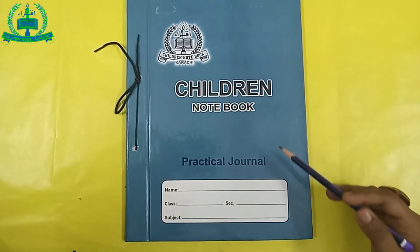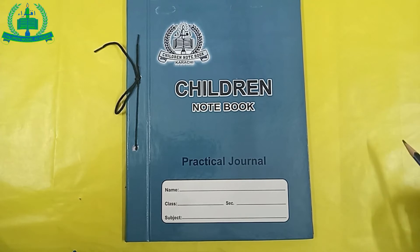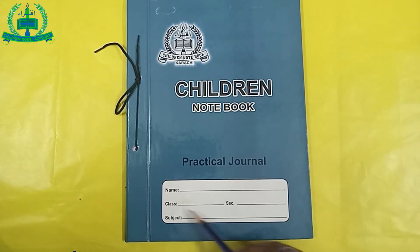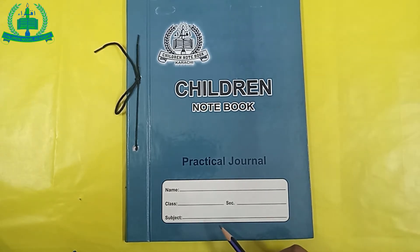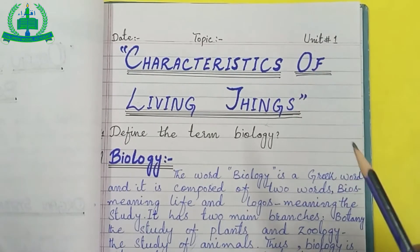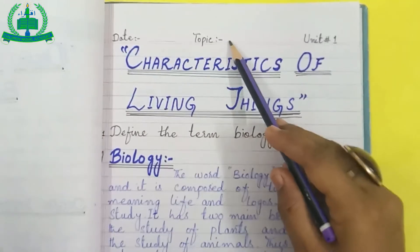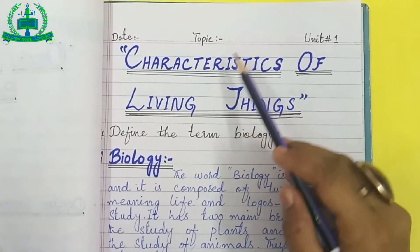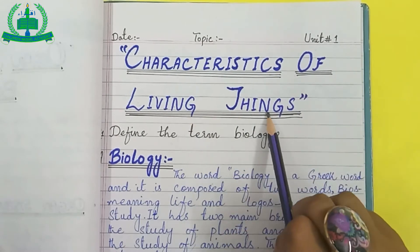This is your science journal. Cover it with a plastic sheet and please mention your name, class, section, subject, and roll number on your journal. Open the first page and write the date and topic: Characteristics of Living Things.